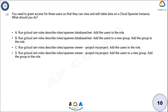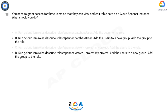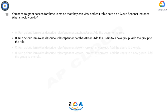Now think 10 seconds for the answer. Option B is correct. Using the gcloud tool, execute the gcloud IAM roles describe roles/spanner.databaseUser command on Cloud Shell. Attach the users to a newly created Google Group and add the group to the role.